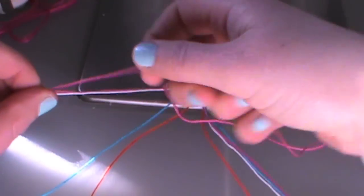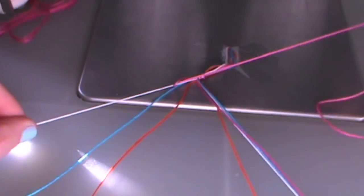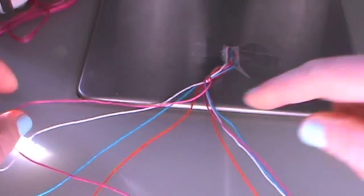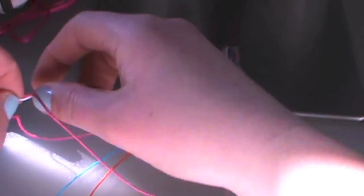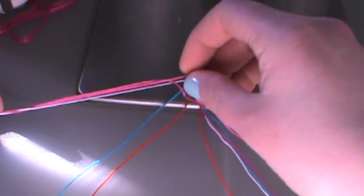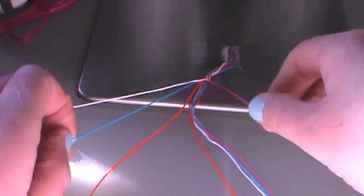You pull your thread through and there's your first knot. Then you have to do that same strand again. So you just lay it out, make sure it's a four shape, pull it through, and there's your second knot.